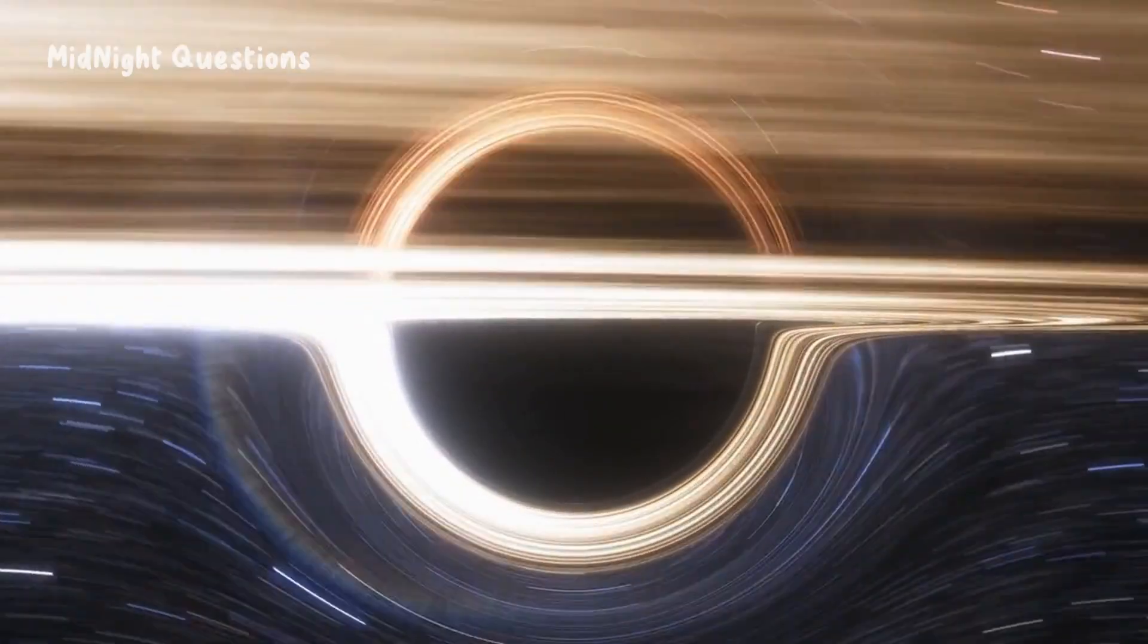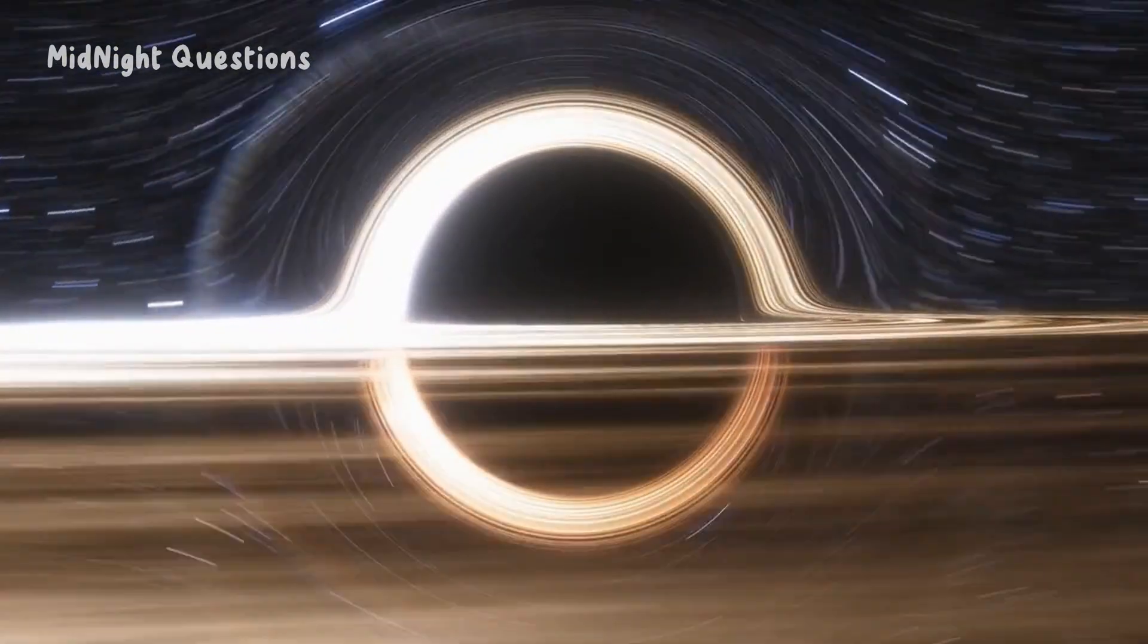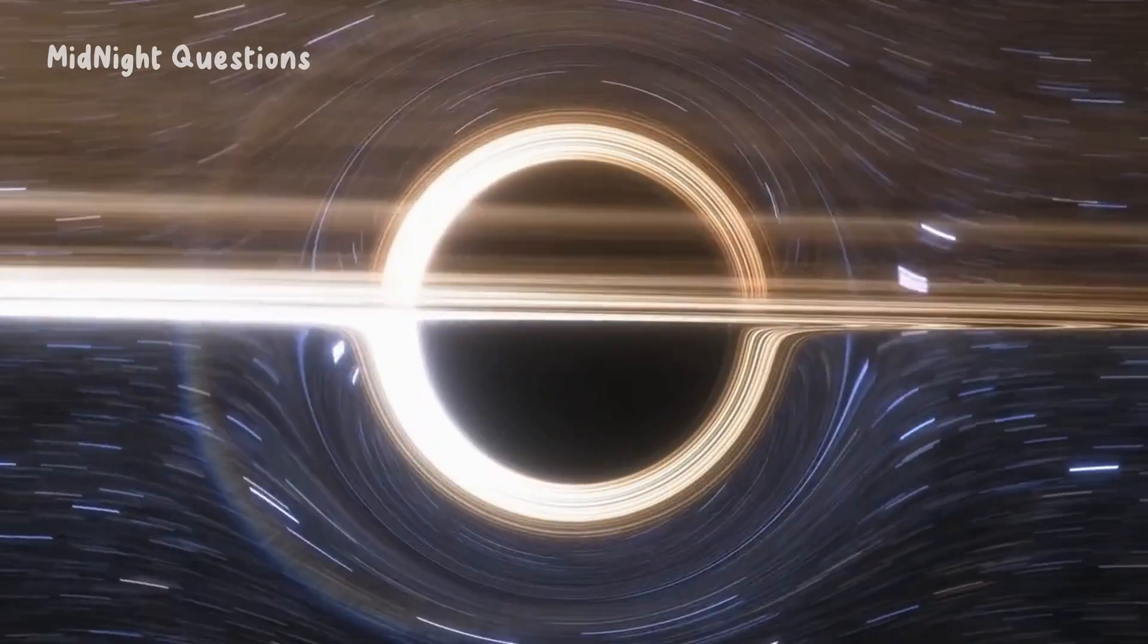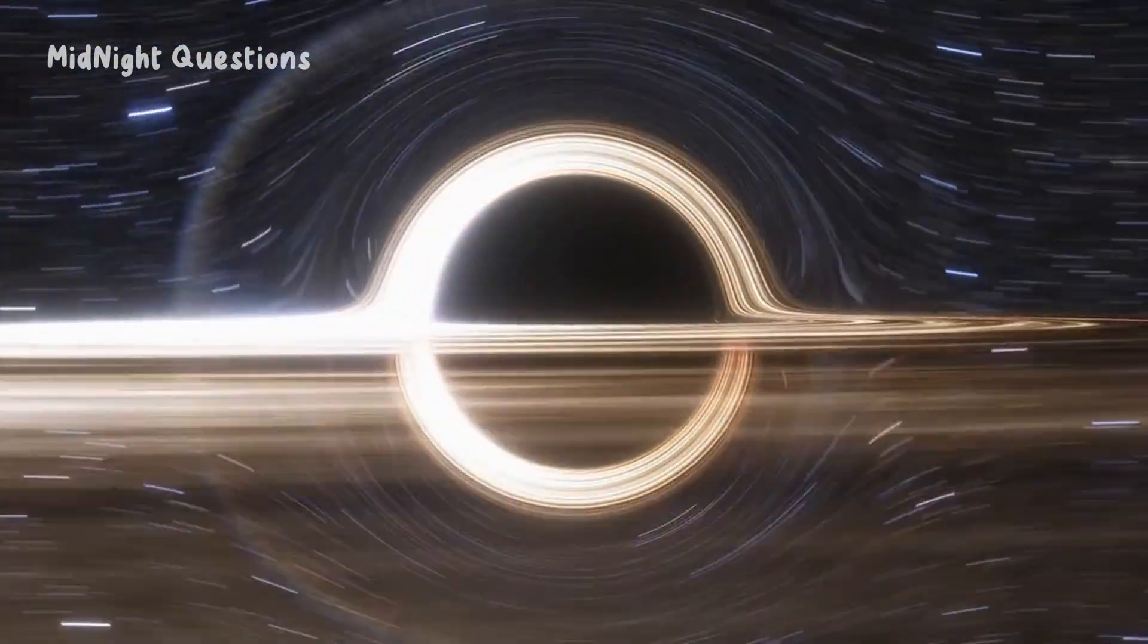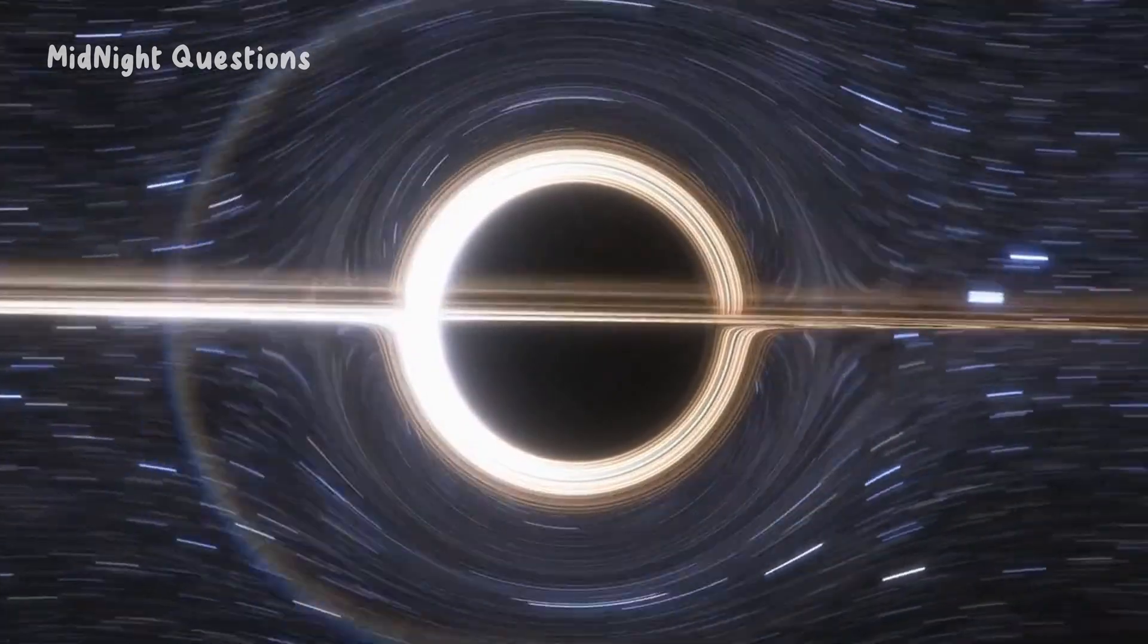Anything that crosses the event horizon is doomed to be crushed by the extreme gravity of the center of the black hole, but objects outside the event horizon can still orbit the black hole just like any other massive object in space.